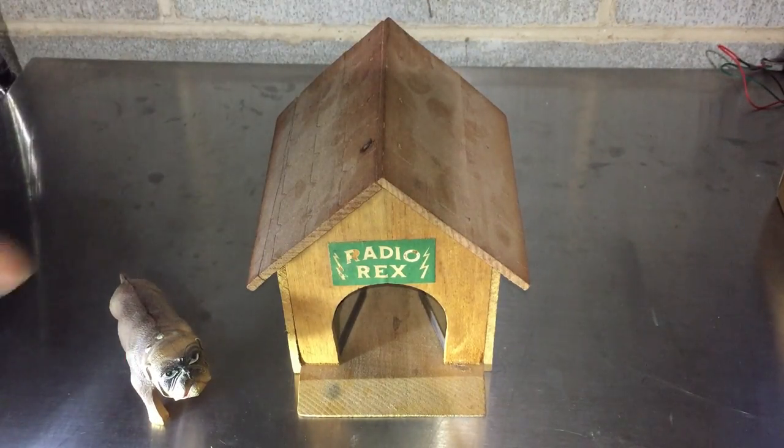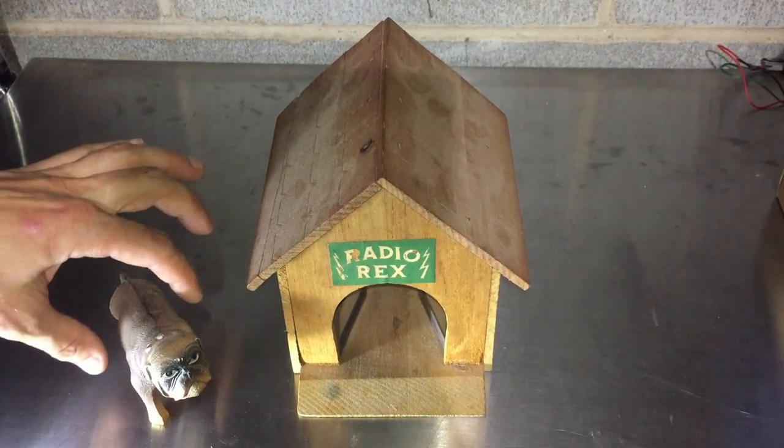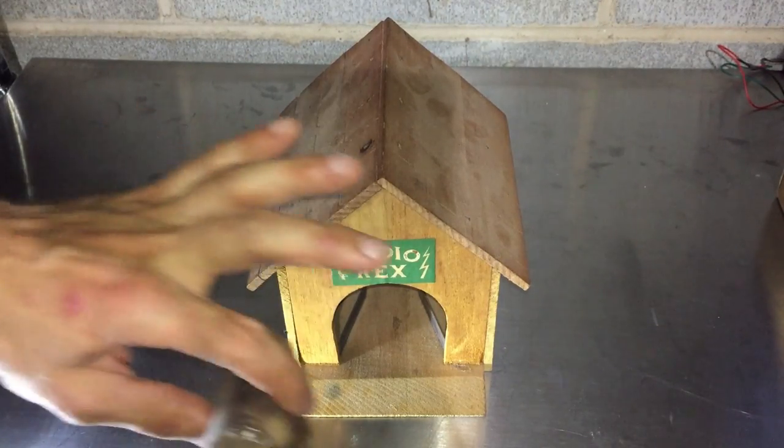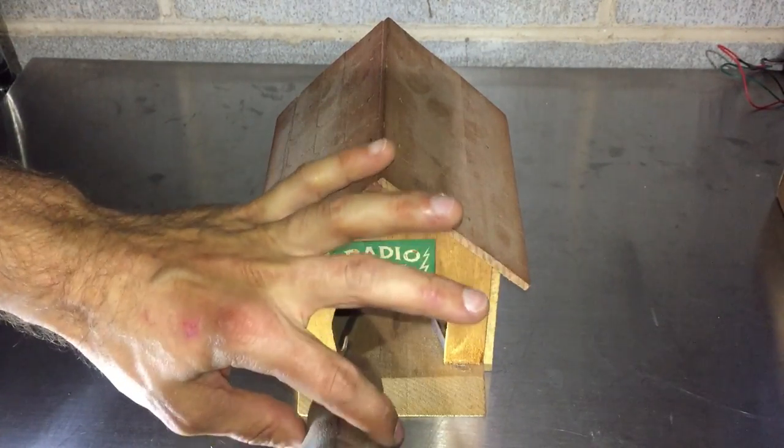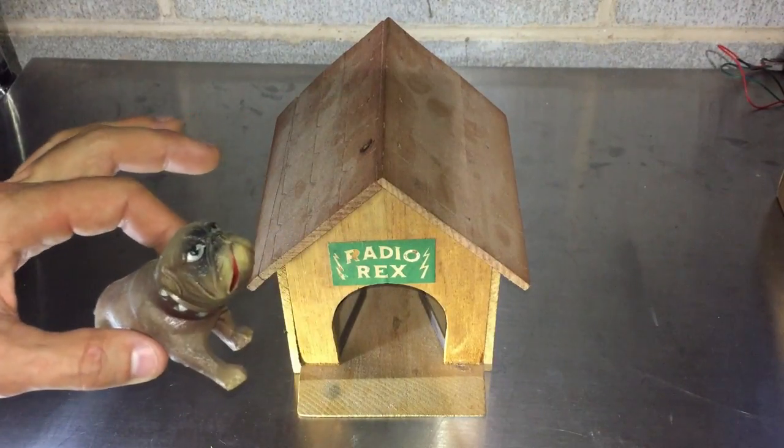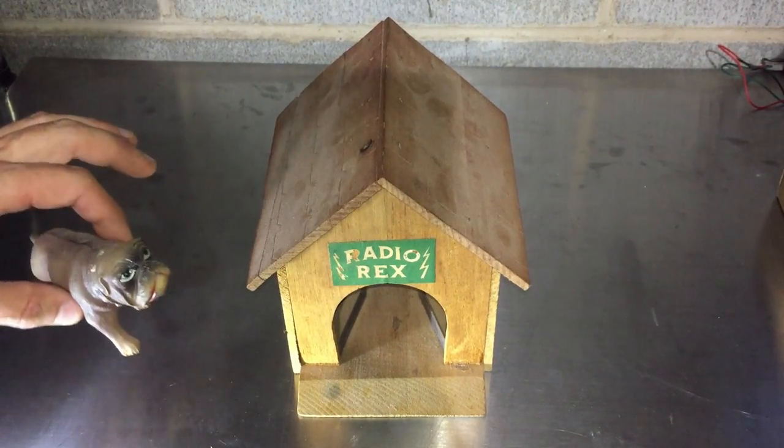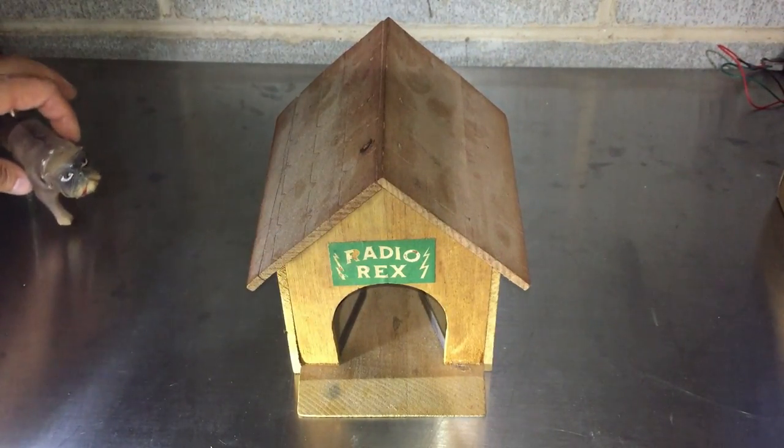So basically what you do is you stick Rex in the doghouse, and then when you say Rex, he pops out. Now Rex is very fragile, most of these Radio Rexes don't actually have the dog anymore, he has long since passed.